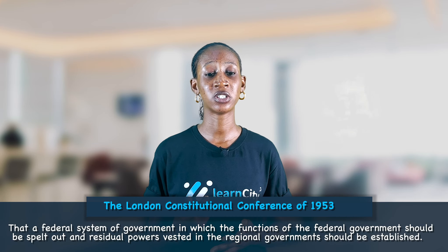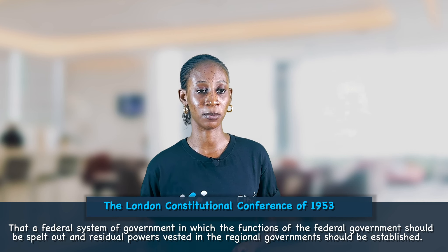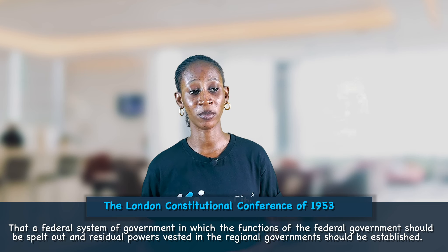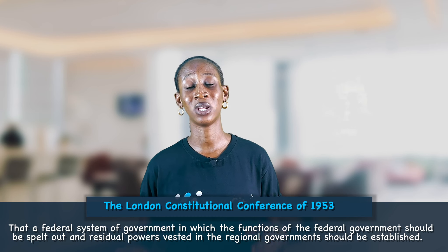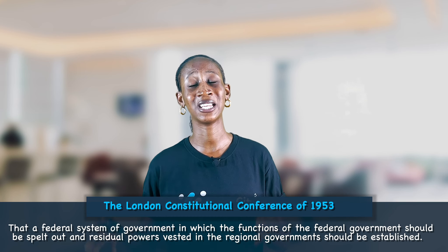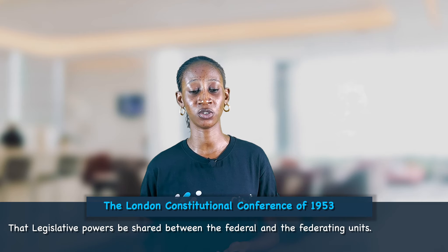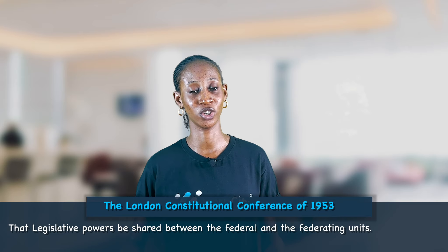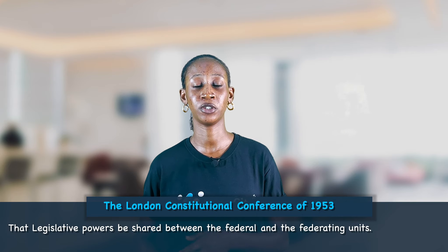The following agreements were reached: that a federal system of government, in which the functions of the federal government would be spelled out and residual powers vested in the regional government, should be established. The legislative powers should be shared between the federal government and the federating units. The federating units were called regions in 1953 and are now called states.